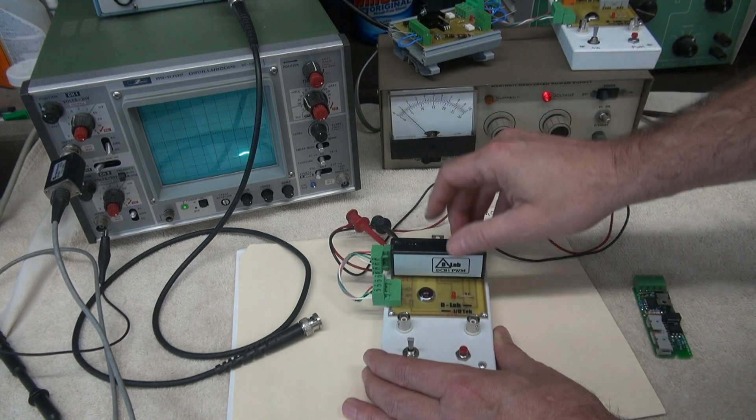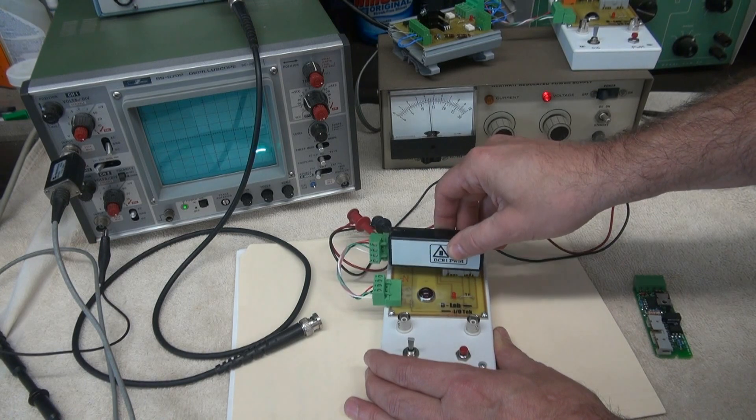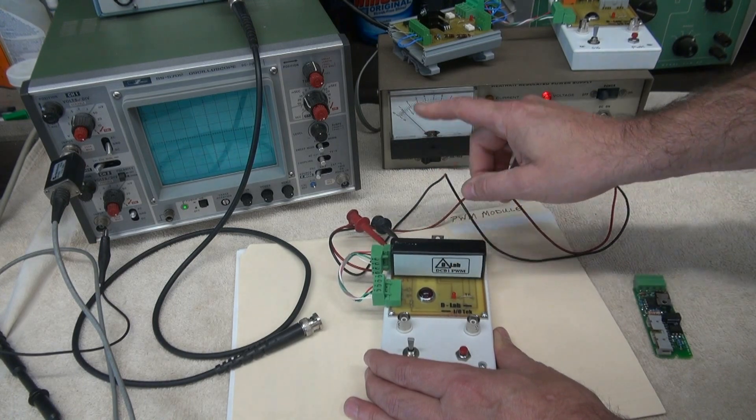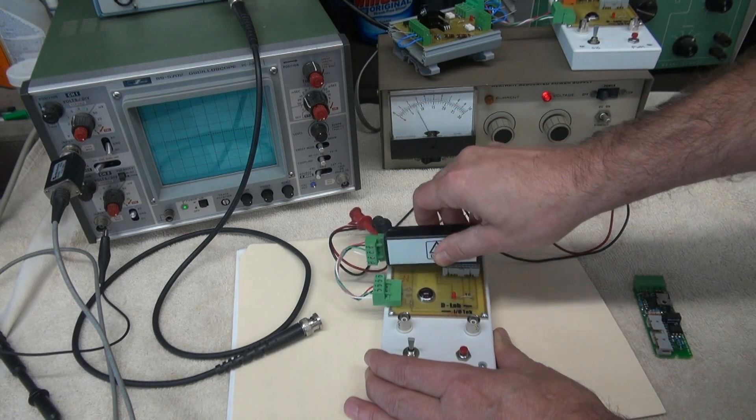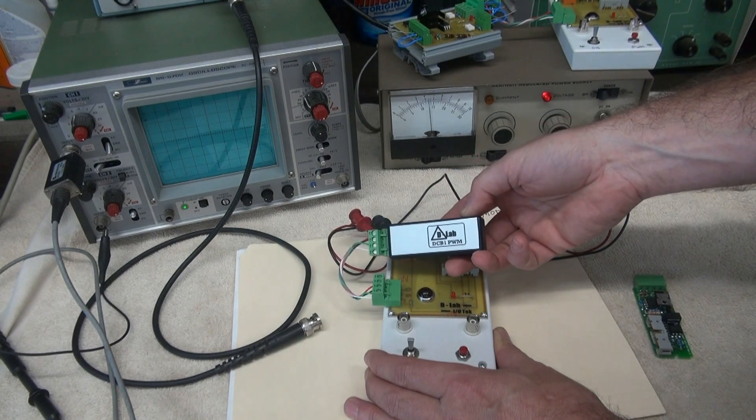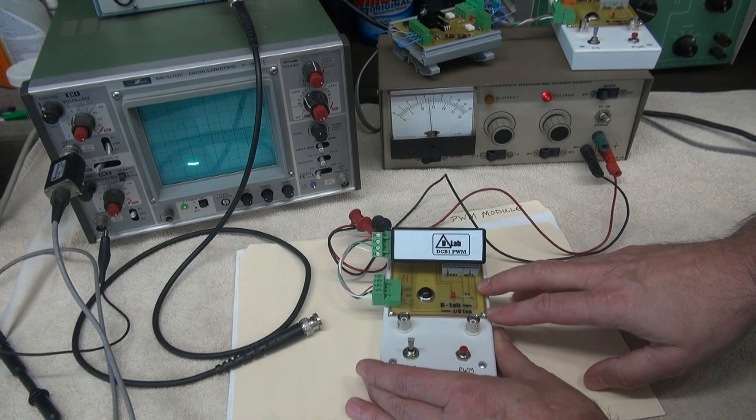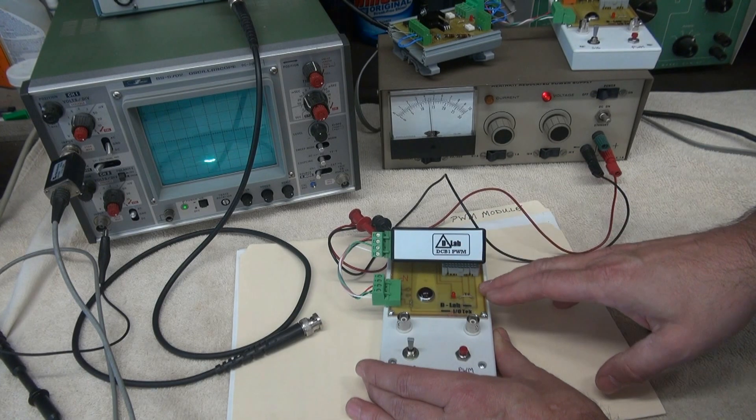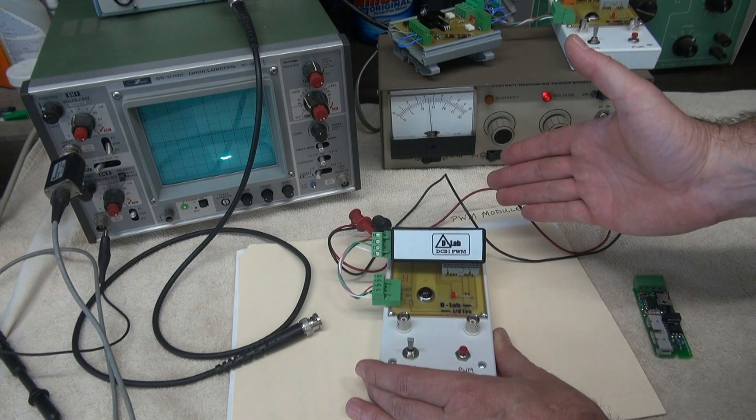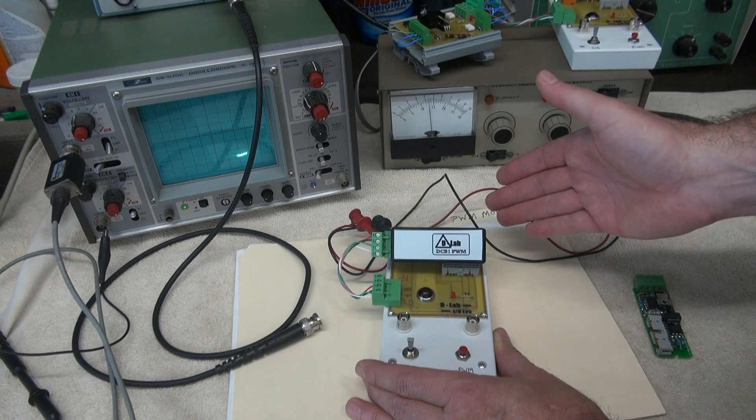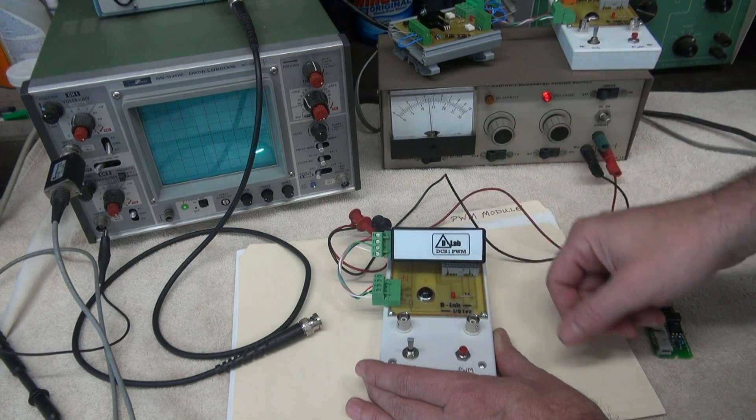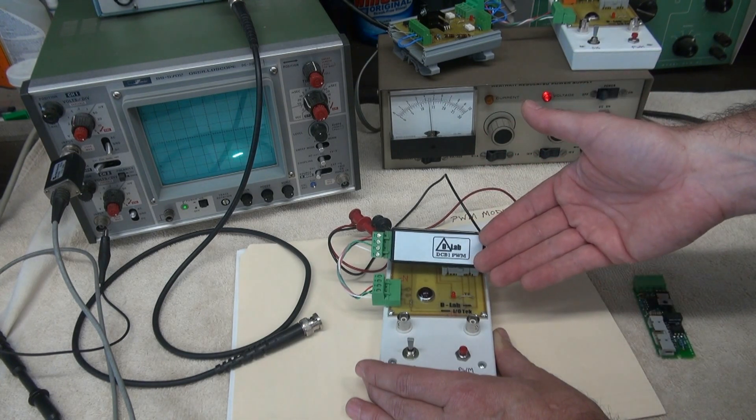But if you look at your power supply, watch when I unplug it. See how the voltage is dropping? It's because the power supply is going into current limit mode, because there's obviously a short on this module. So when you use this IOTech, you have to use a current limited power supply. Don't hook this thing up to a car battery, or you're going to have a ball of smoke coming out of your little module.